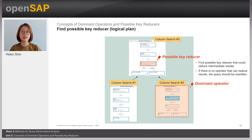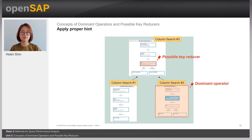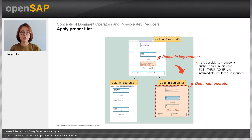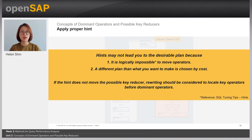If there is no operator that can reduce the result, then the query should be rewritten. So we found the dominant operators and possible key reducer. Then we can think about the proper SQL hint to make the query performance better. If the possible key reducers are pushed down, then the intermediate result can be reduced. Here, we can think about the SQL hint join through aggregation. However, hints may not lead you to the desired plan, because it is logically impossible to move operators, or a different plan from what you want to make is chosen by cost.